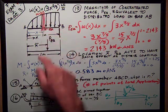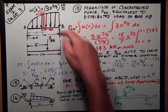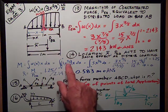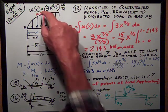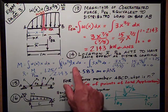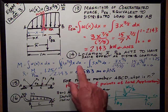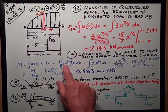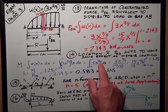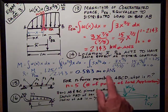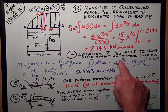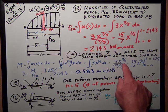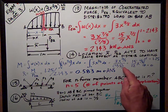So that's equal to the integral of 3x to the two-fifths, which is that height, times x dx. Combine those x terms, I have 3x to the seven-fifths dx. Once again, x to the n plus 1 over n plus 1.